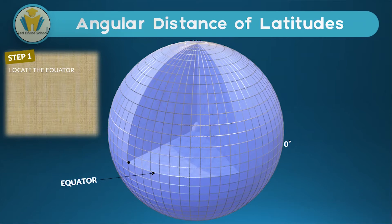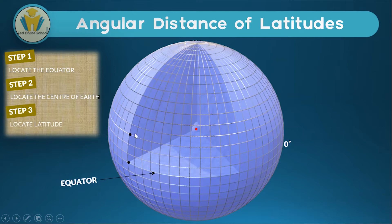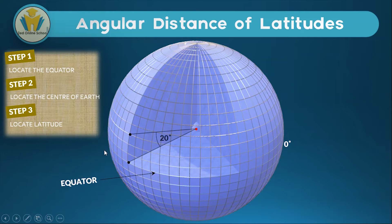After we've located the equator we need to locate the center of the earth. Then lastly we need to locate the latitude whose angular distance we want to find. Let's say we wanted to find the angular distance for this line, so there was a point there. When we join these three points we're going to form an angle. After we measure the angle in between these lines we can confidently say we've got the angular distance for the latitude shown here. Let's say this angle here was 20 degrees — it means the angular distance of this latitude from the equator is 20 degrees.